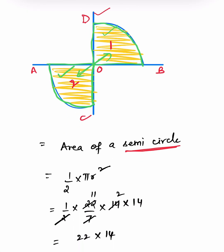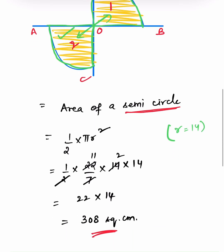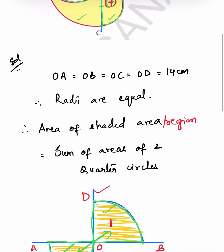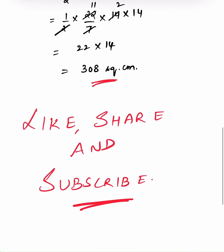Area of a semi-circle is half pi R squared. R is 14 here, so half into 22/7 into 14 into 14, which is equal to 22 into 14, which is equal to 308 square centimetres. This is the final area of the shaded region in yellow in the given figure. Like, share and subscribe for more interesting maths videos.